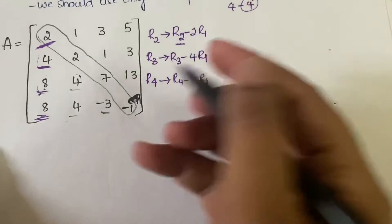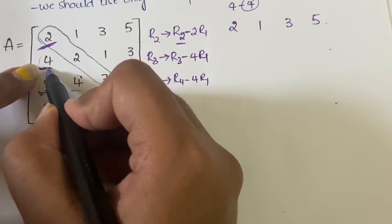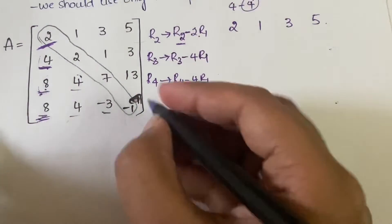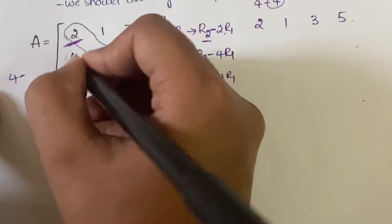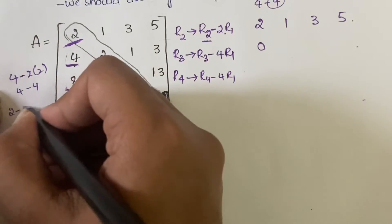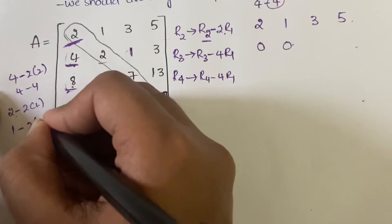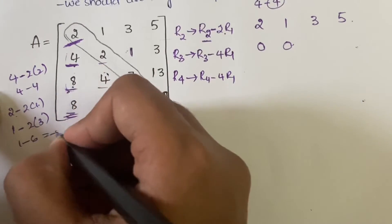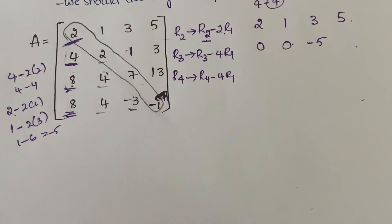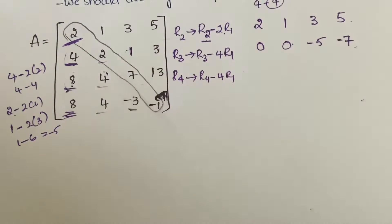Now let's see what the matrix becomes. The first row stays as it is: 2, 1, 3, 5. For R2 (R2 minus 2*R1): 4 minus 2 into 2 = 0; 2 minus 2 into 1 = 0; 1 minus 2 into 3 = 1 minus 6 = minus 5; 3 minus 2 into 5 = 3 minus 10 = minus 7. So R2 is now [0, 0, minus 5, minus 7].